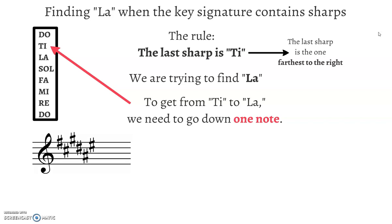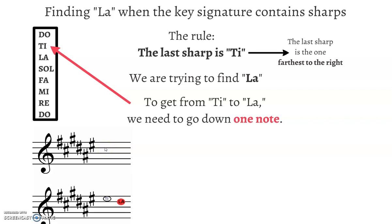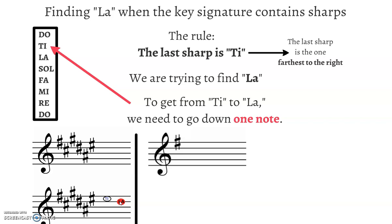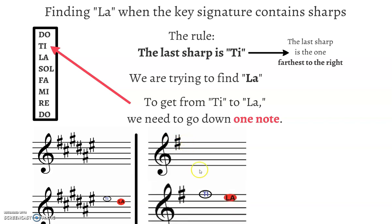Here's a key signature example. Our last sharp is the one farthest to the right, away from the clef sign, and that is this one here on the top space. That is where Ti is located — the note drawn right here in the space. We go down one more to La, so: Ti, La. Second example: there's only one sharp, so that is the last one, on the line. Ti is on the line, and La is one step below on the space.